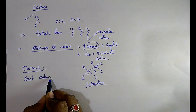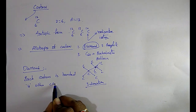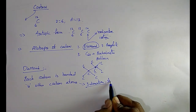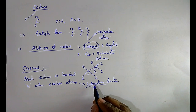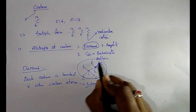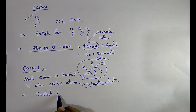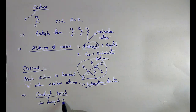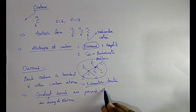In diamond, each carbon is bonded to four other carbon atoms to form a rigid three-dimensional structure. The bonds throughout the lattice are covalent bonds — formed by sharing of electrons. Covalent bonds are present throughout the lattice.